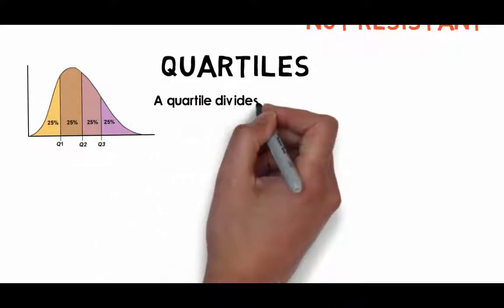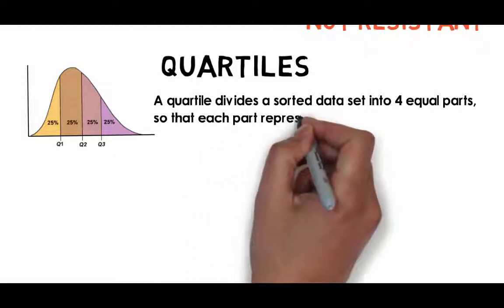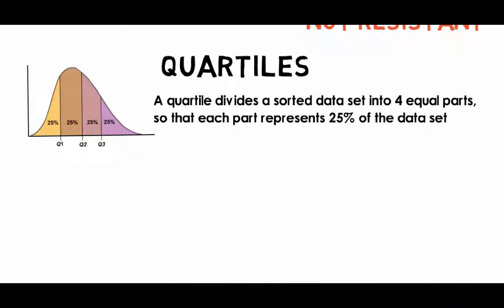Quartiles. These are measures of location which divide the data set into four equal parts having 25% of the values in each.